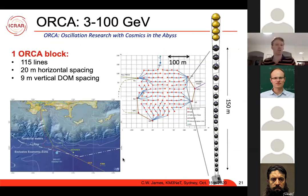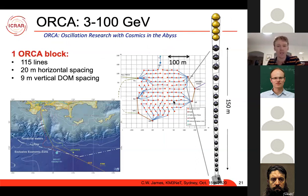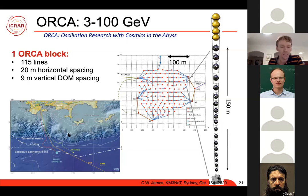ORCA targets the roughly 3 GeV to 100 GeV range. It will also consist of 115 lines, but only 150 metres long, with about 9 metres spacing between optical modules and only 20 metres of horizontal spacing — a much denser array because you're looking at lower energies where there's much less light. ORCA is deployed off the southern coast of France, close to where the current Antares detector is, at a depth of about 2.5 kilometres.